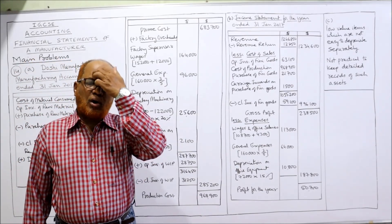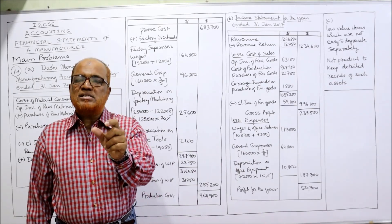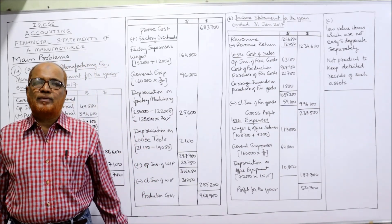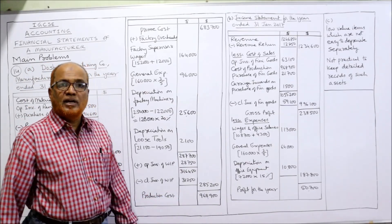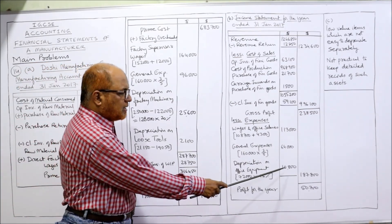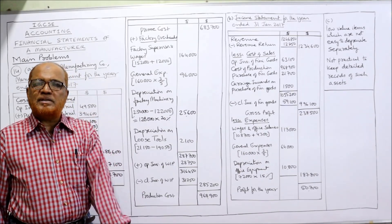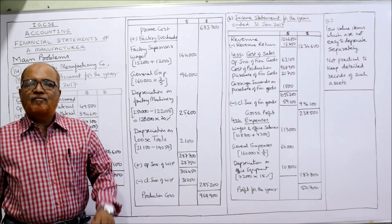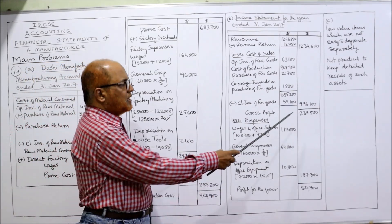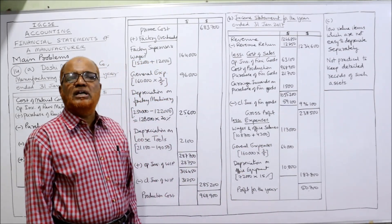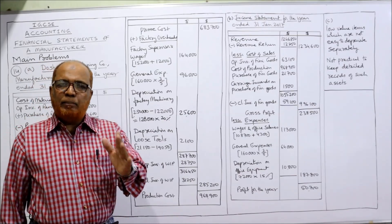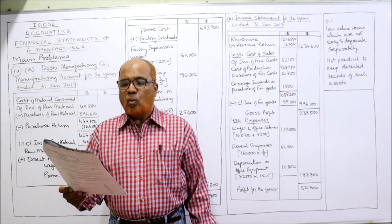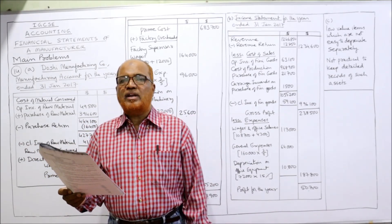Last expense: depreciation on office equipment at 15% on straight-line basis — original cost method. Original cost of office equipment from the trial balance: 72,000. So 72,000 × 15/100 = 10,800. Total of all three expenses: 1,87,800. Gross profit 2,38,500 minus expenses 1,87,800 gives profit for the year: 50,700. Manufacturing account and income statement are now complete.